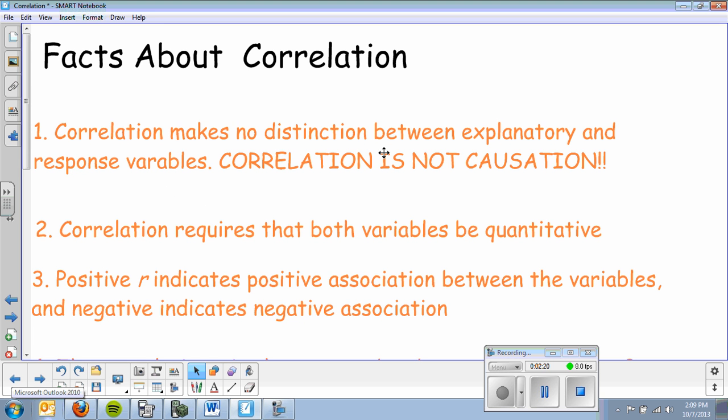Some quick facts about correlation. You should have these copied down in your notes. Correlation makes no distinction between explanatory and response variables. Correlation is not causation. Just because there's a relationship between the two doesn't mean that one causes the other or affects the other. Correlation requires that both variables be quantitative. You have no categorical data here.